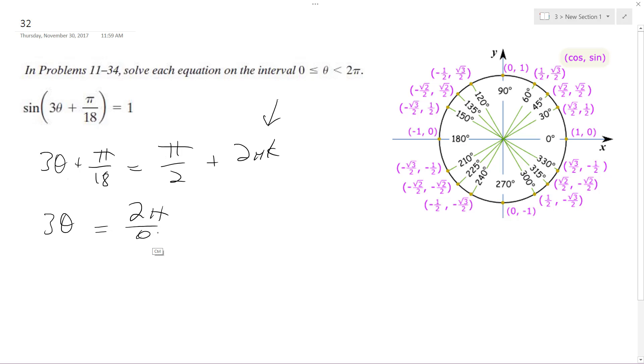I don't know, that's not right. 8 pi over 18... 4 pi over 9, yeah, 4 pi over 9. I made a mistake. Minus 2 pi k.